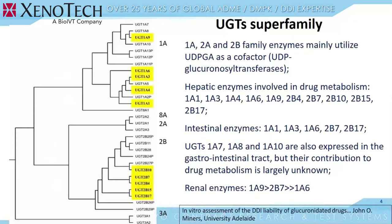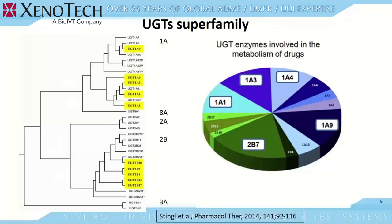Hepatic enzymes involved in drug metabolism include these 10 major UGTs. Intestinal enzymes are UGT1A1, A3, A6, 2B7, and B17. UGTs are also expressed in the gastrointestinal tract, but their contribution to drug metabolism is largely unknown. Renal enzymes are 1A9, 2B7, and to a lower extent 1A6. Individually, 1A1, A3, A4, A9, and 2B7, all present in hepatocytes, contribute most to drug metabolism — between 15 and 20 percent each.